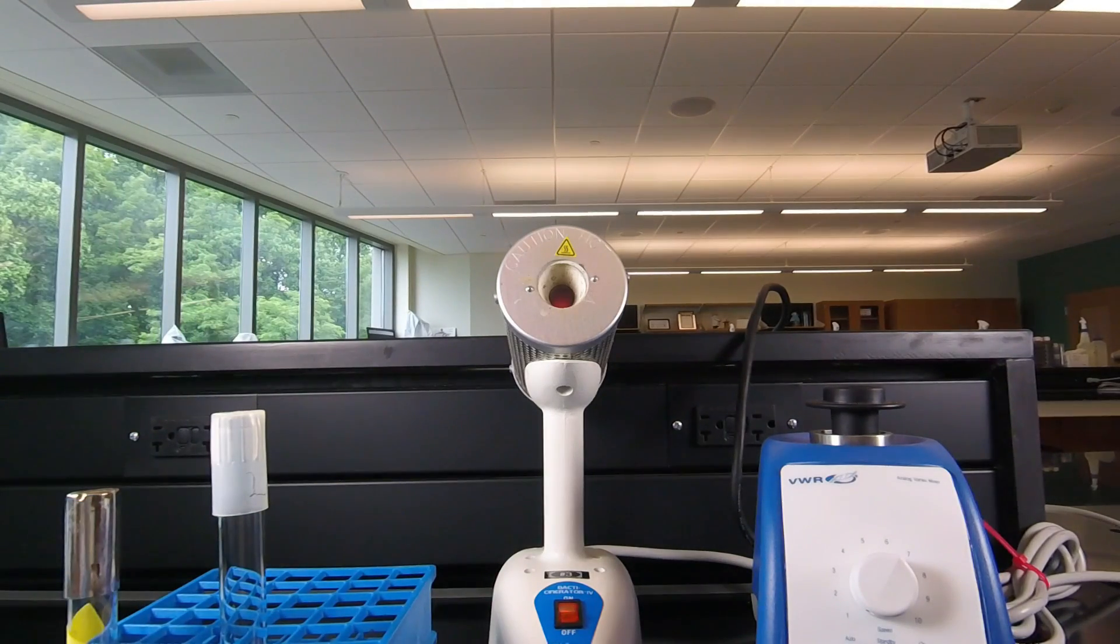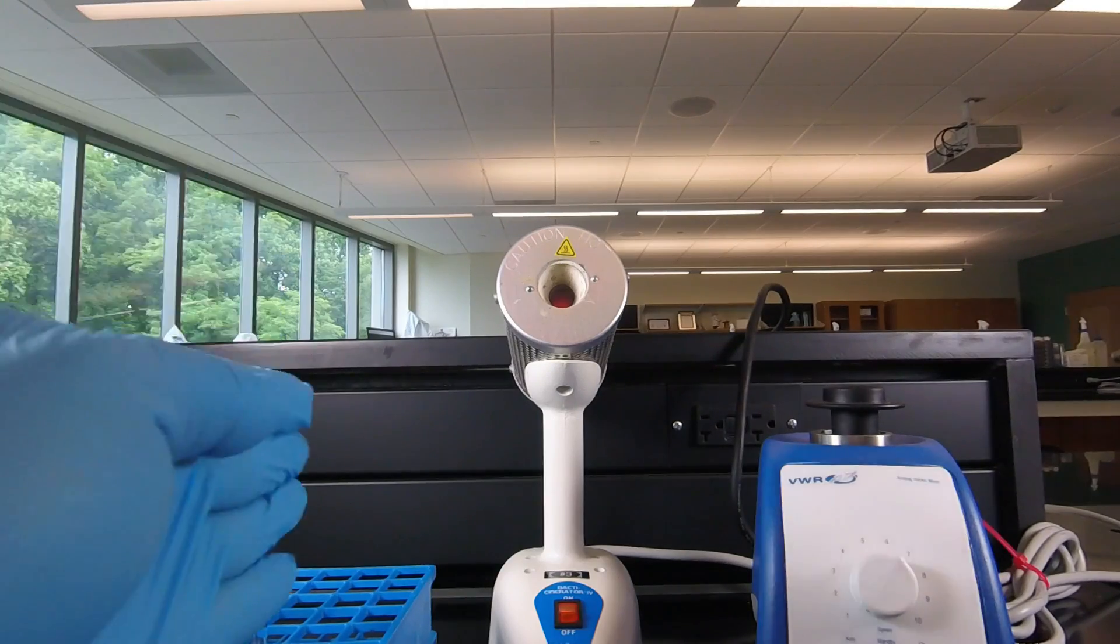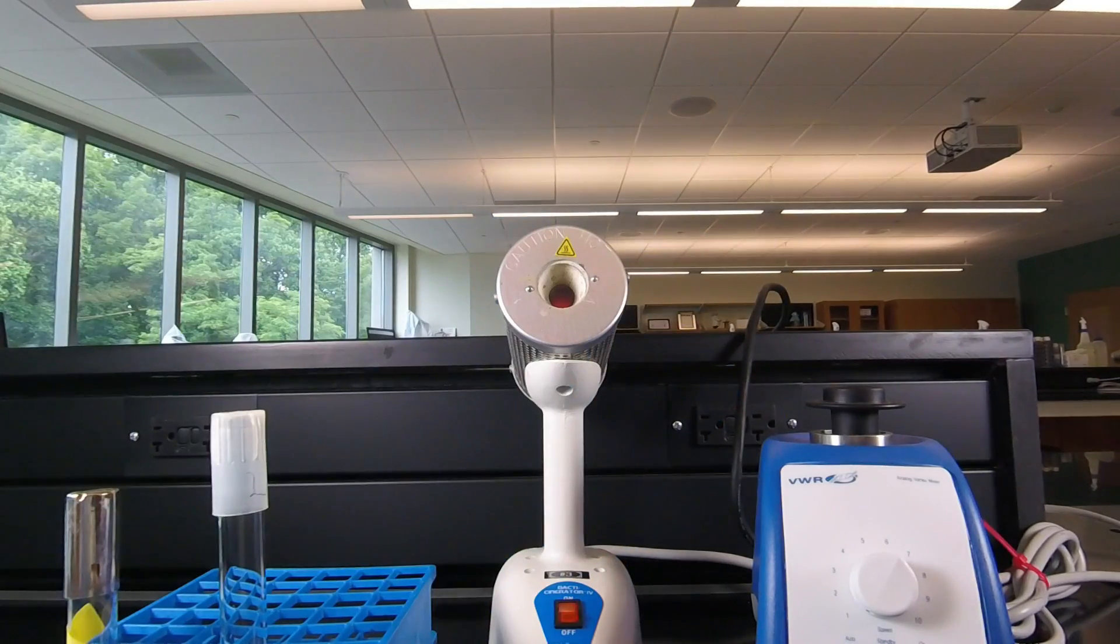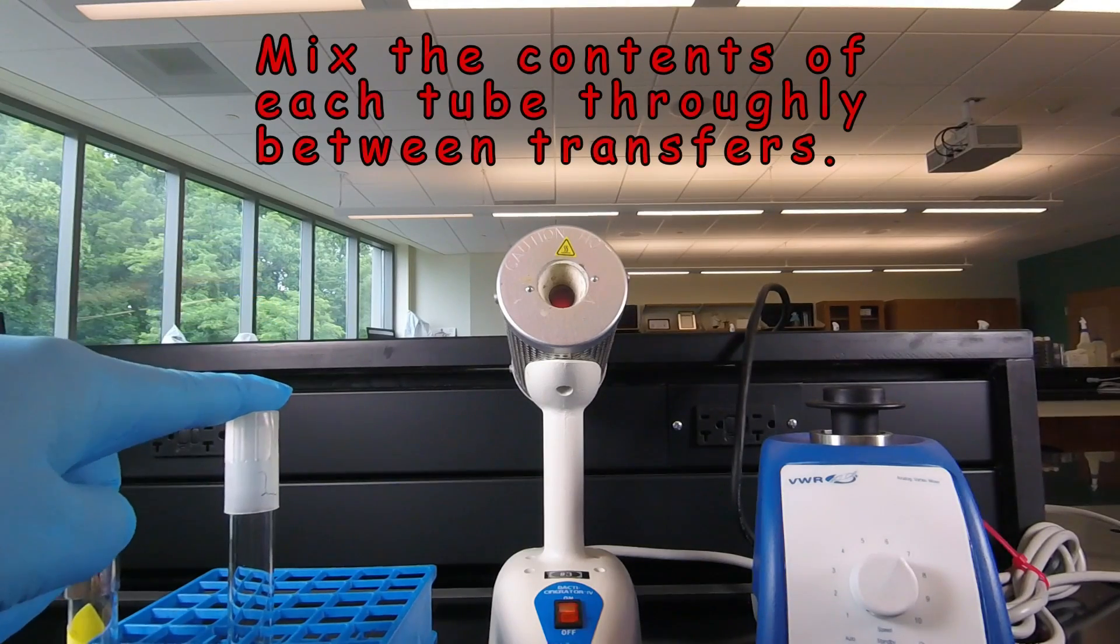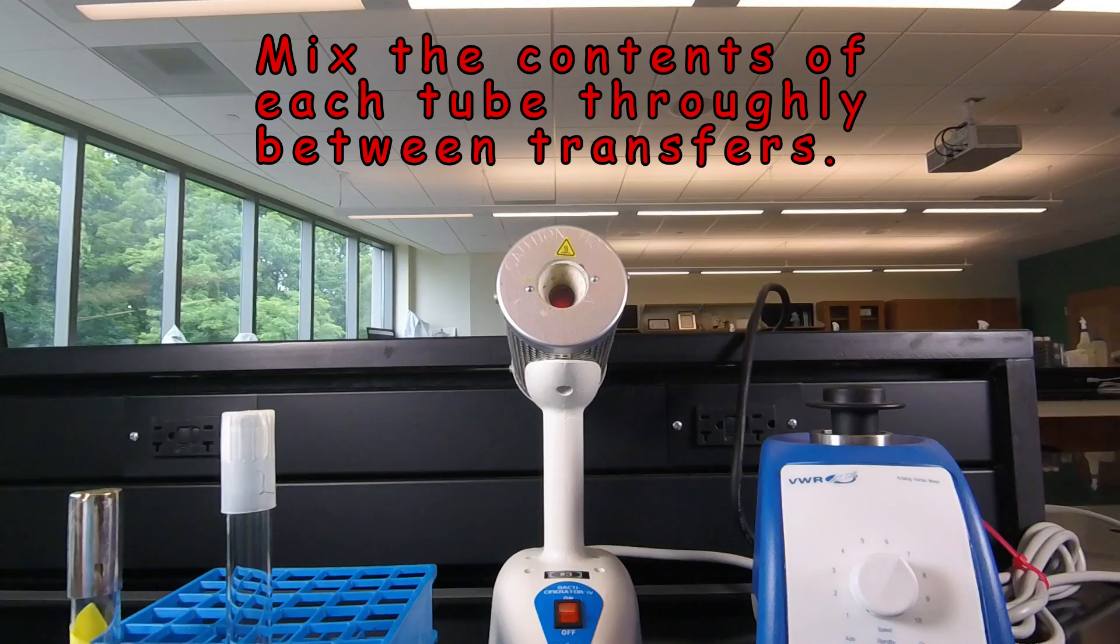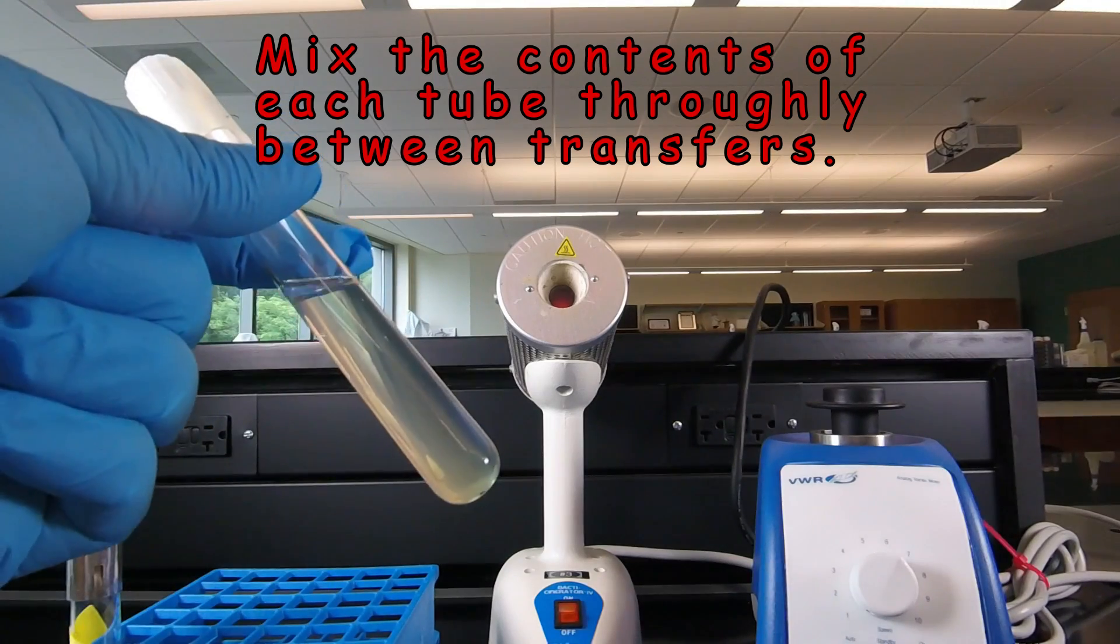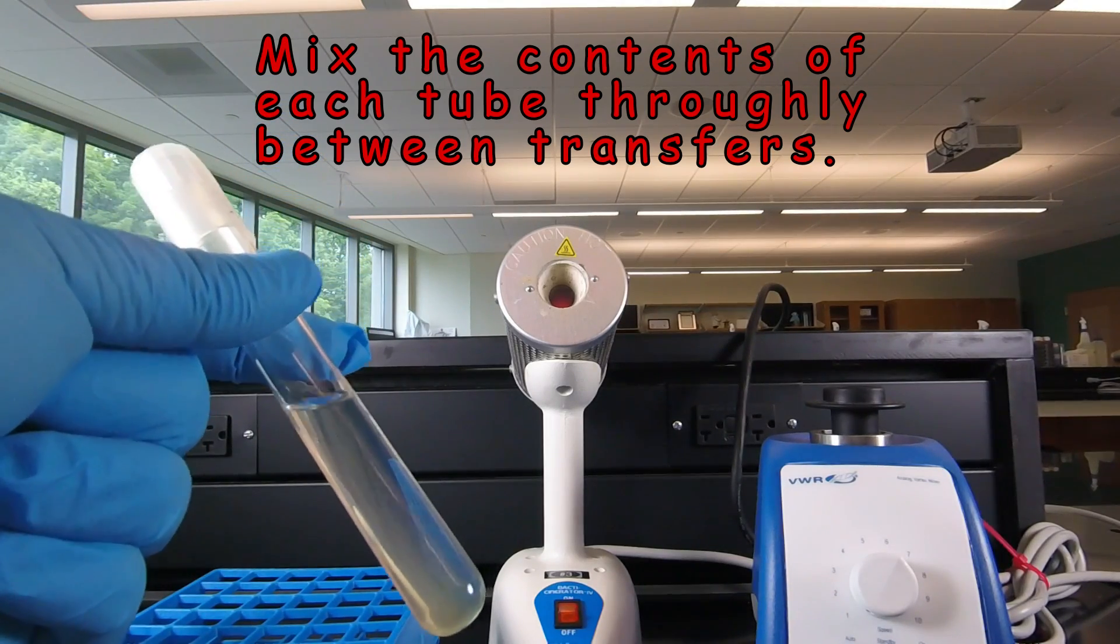Now you're going to be doing a serial dilution during lab where we're going to be transferring bacteria from tube to tube to tube. And so it's very important whenever we get ready to remove bacterium from one tube and put it into the next tube that we mix the bacteria up thoroughly so they're evenly distributed.